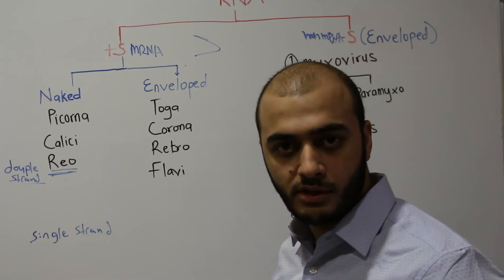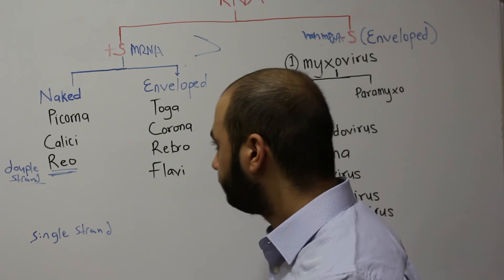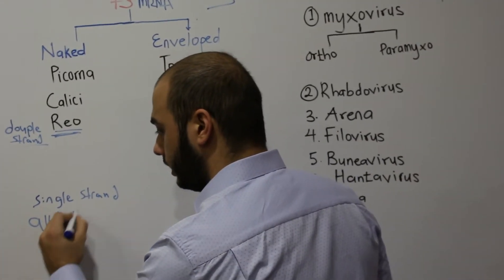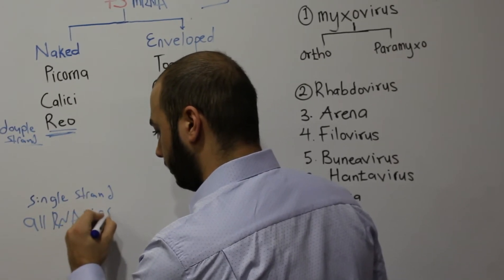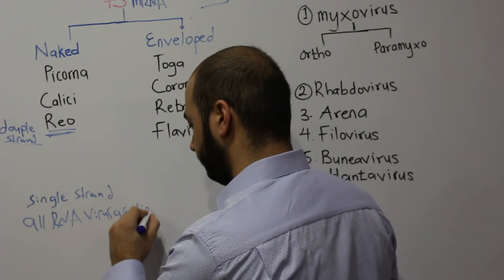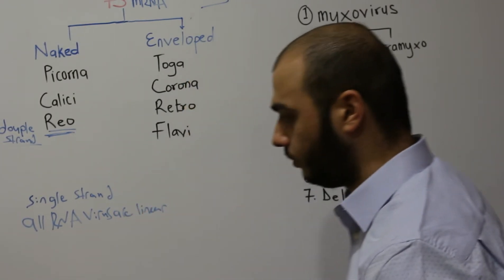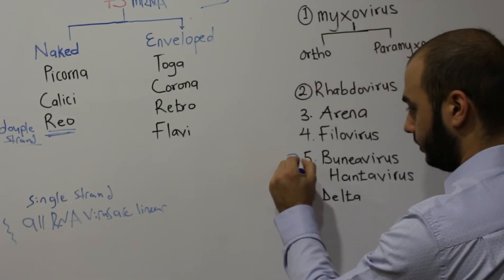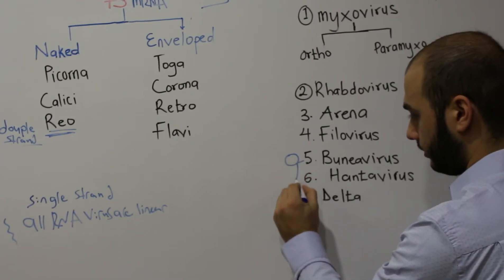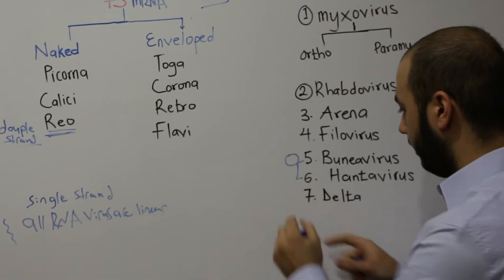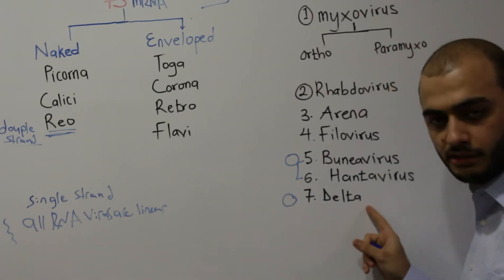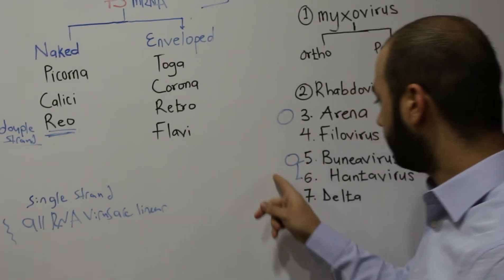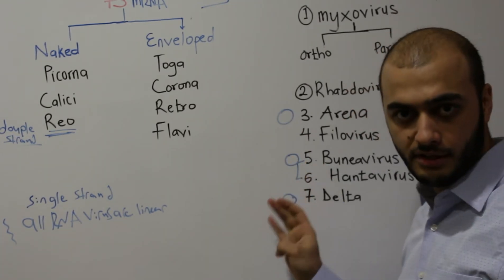Another point: when we say RNA virus, the genetic material can be either circular or linear. All RNA viruses are linear except three: Bunyavirus, Hantavirus (which is the same family as Bunya), and Delta virus, which is hepatitis D. These three are the circular RNA viruses.